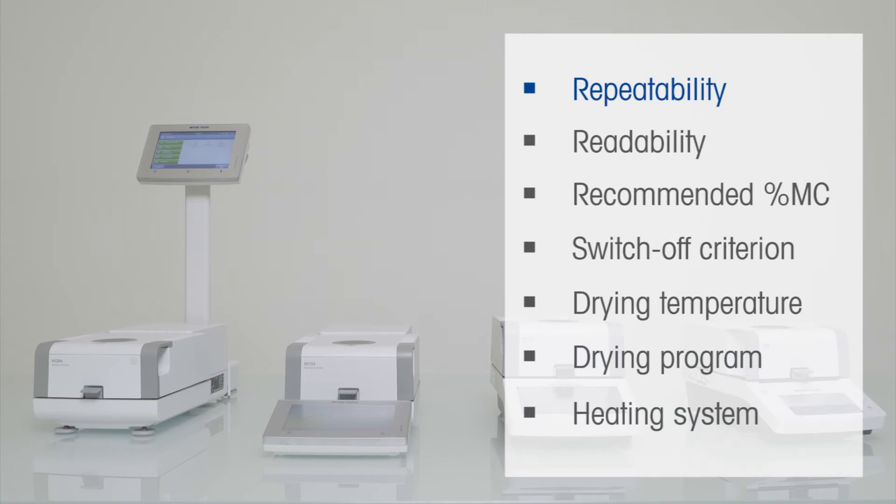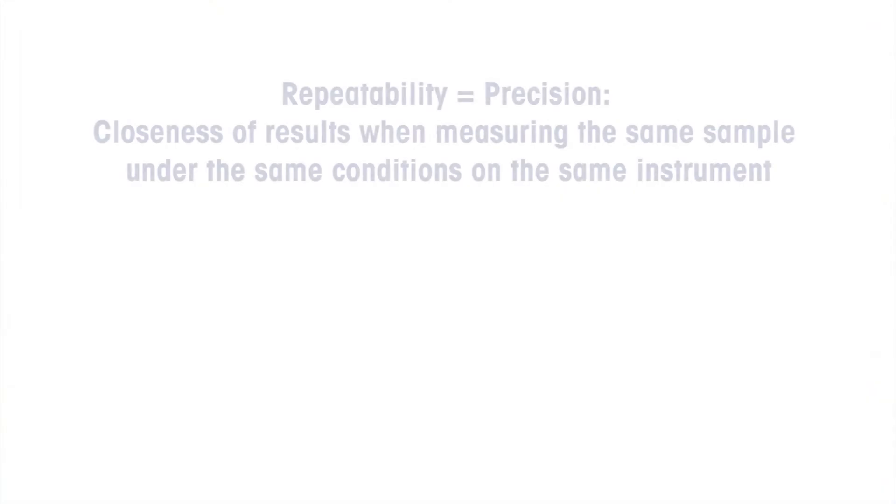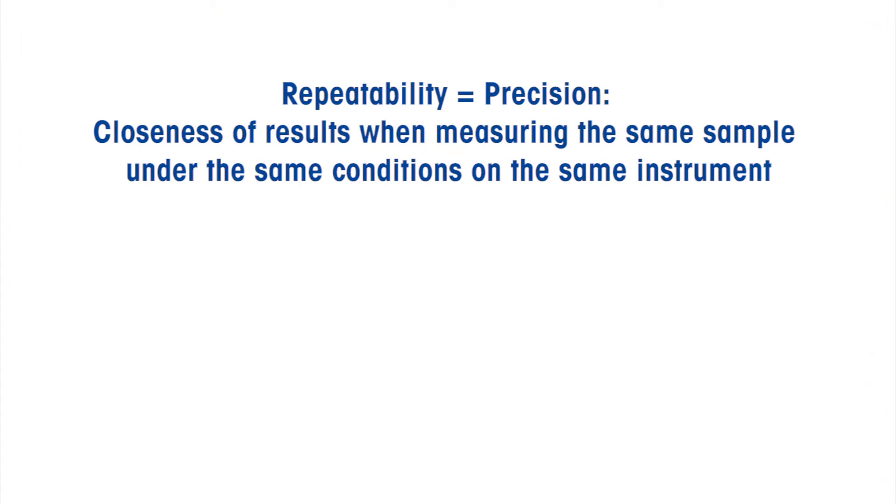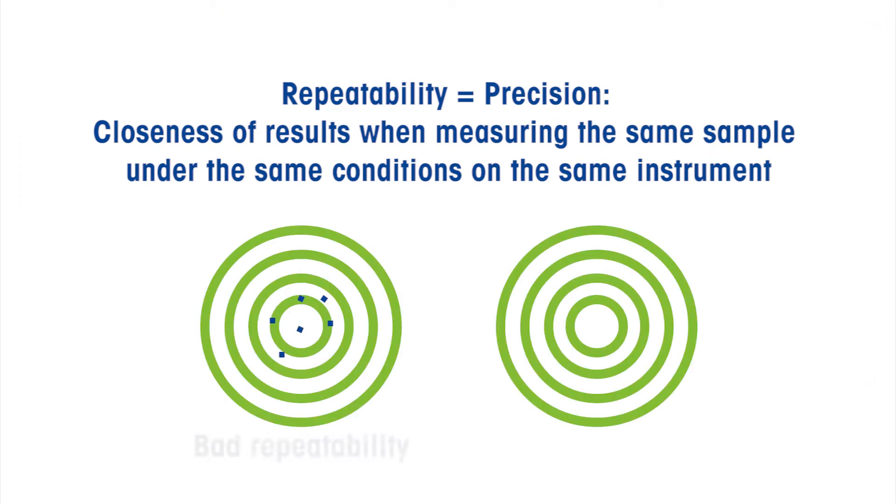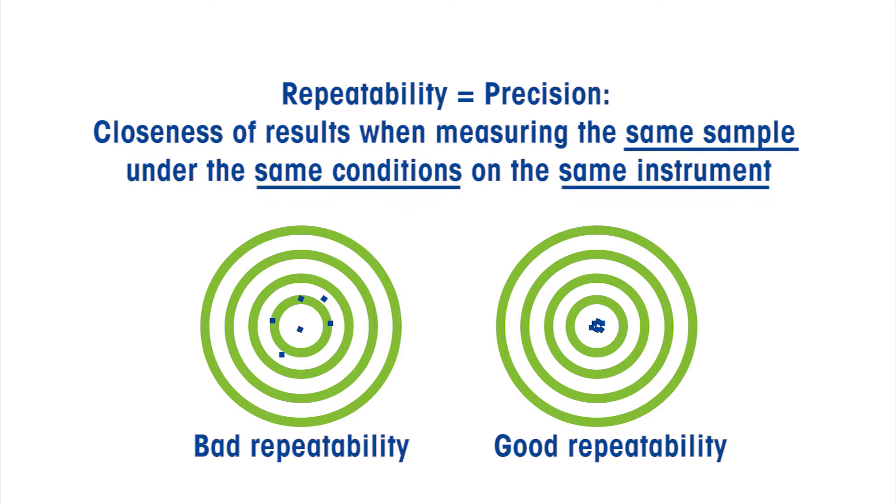The most important parameter for a moisture analyzer is repeatability or precision. It describes how close together the moisture content results are when the same sample is tested repeatedly under the same conditions and on the exact same instrument. It is expressed as standard deviation in the datasheet.